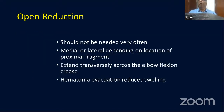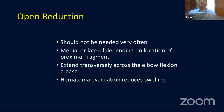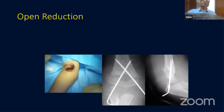Open reduction should not be needed in most fresh fractures — approximately 95% should achieve closed reduction. If open reduction is required, you can approach from the medial, lateral, or anterior side. An anterior transverse incision is particularly useful for extension-type fractures because the proximal fragment comes out anteriorly, and it also provides access to the vessel if there is a vascular injury.